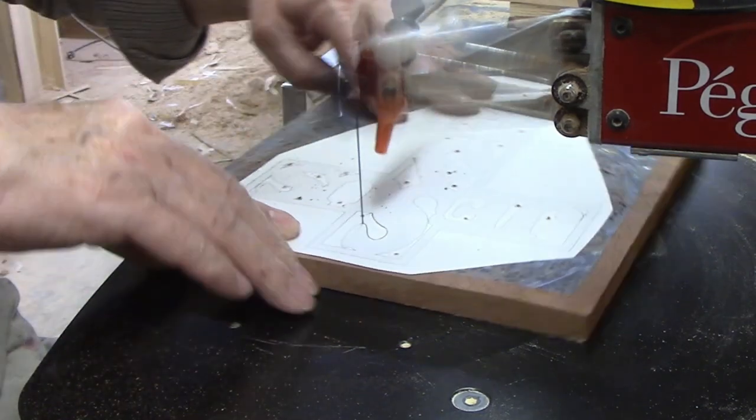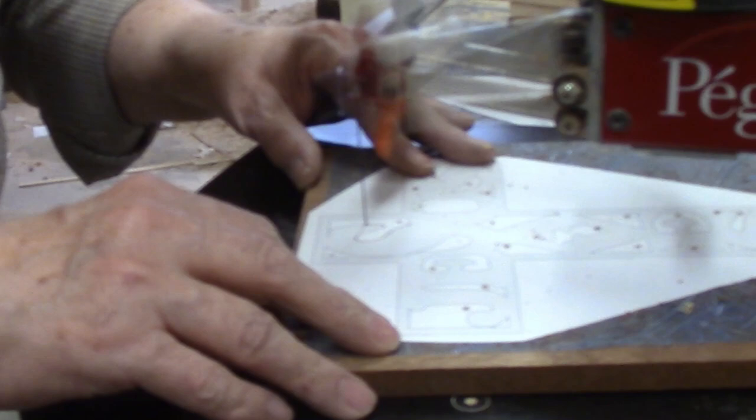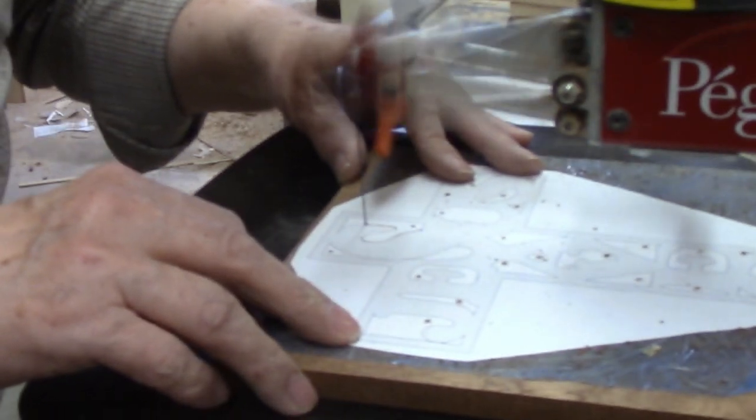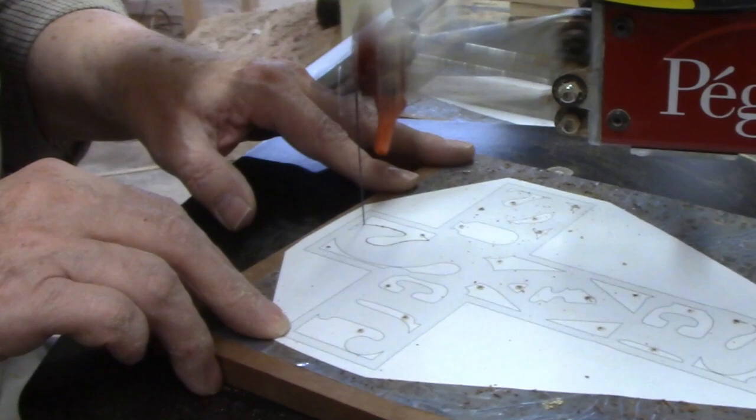For those very sharp angles I sometimes cut from the pilot hole to a corner then I back the blade up to the pilot hole and swivel it 180 degrees. Then I back the blade into the corner del side first.